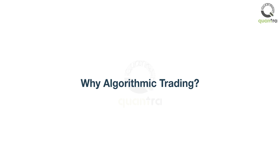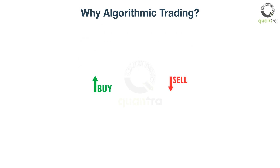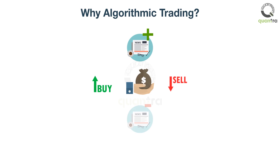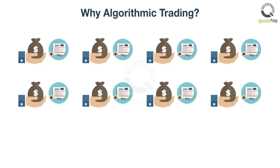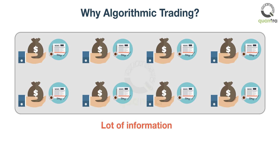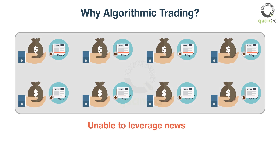Why algorithmic trading? Suppose you usually use a simple strategy to trade — you buy or sell a stock based on positive or negative news around the stock. Over time you realize the shortcoming of this approach: there are plenty of stocks, each with a lot of information and news. Analyzing such huge amounts of information is very difficult, and as a result, you miss opportunities to leverage this news for most stocks each day.